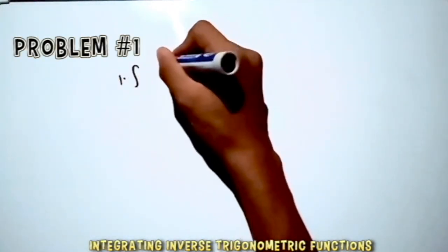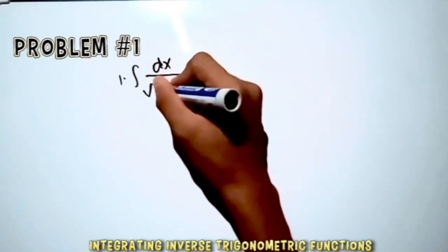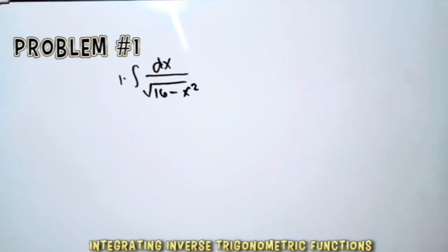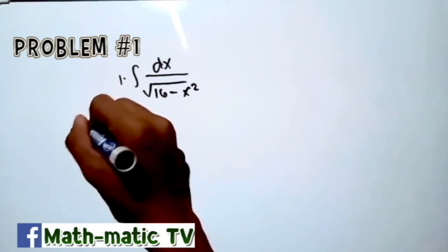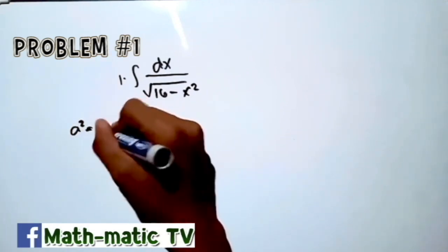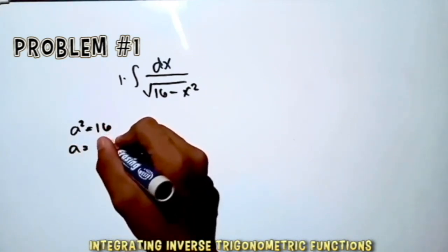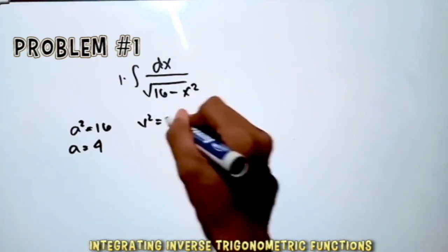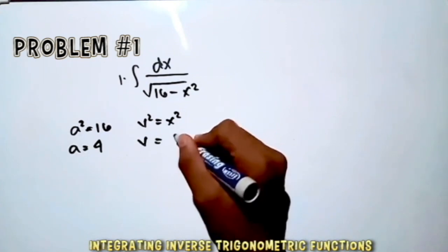Let's integrate dx over the square root of 16 minus x². This looks like the arcsin formula. So a² is equal to 16, and a is equal to the square root of 16, which is 4. And v² is equal to x², so v is equal to x.